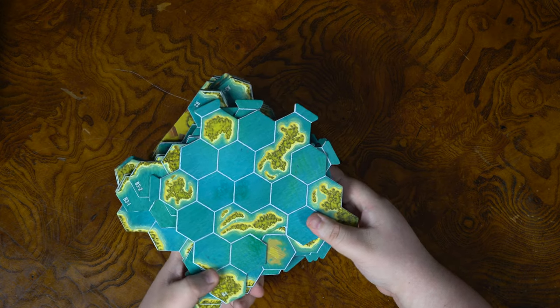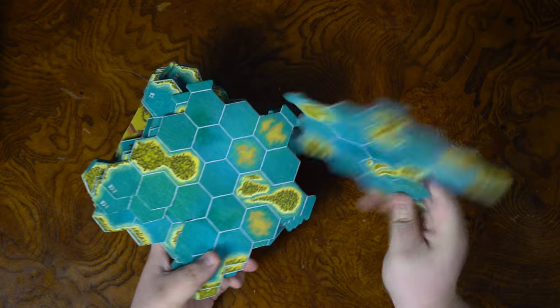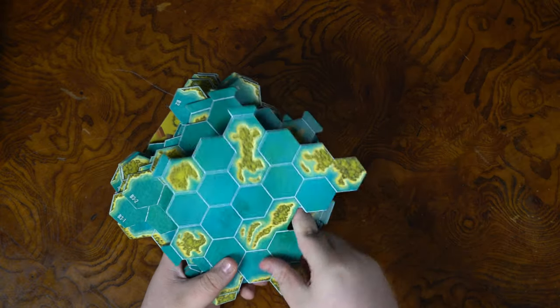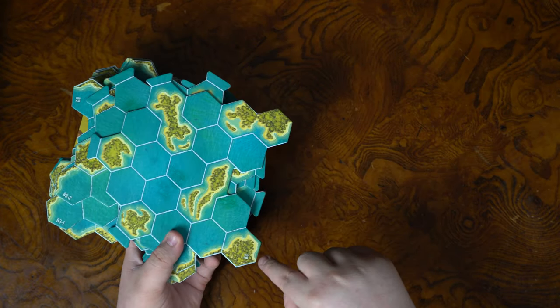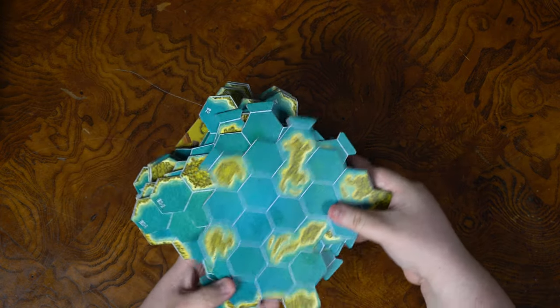So here are the map tiles I just punched out. They only say Mississippi Queen on the back. Pretty durable. And they have coordinates like B4 or B3-2 for setup.